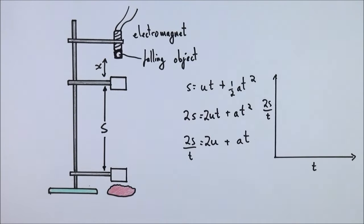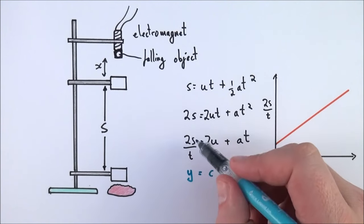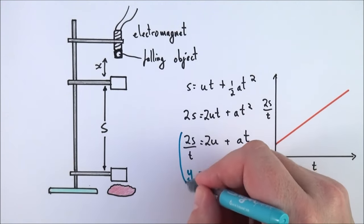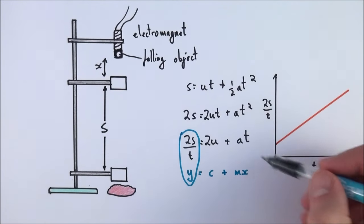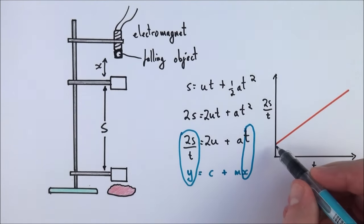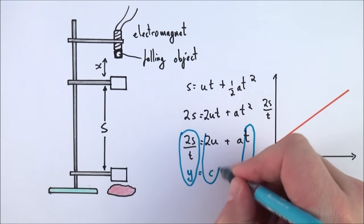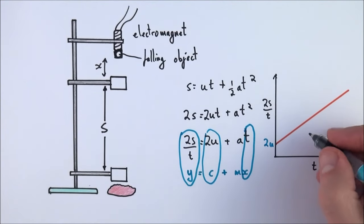What you should then find is that you have a relationship that looks a bit like this. The reason for that is on the y-axis we have 2s over t, so this is my y term. Remember y equals mx plus c. I've plotted t on the x-axis. What that means then is that the y-intercept over here should be equal to 2u, and that means the gradient is going to be equal to the acceleration.